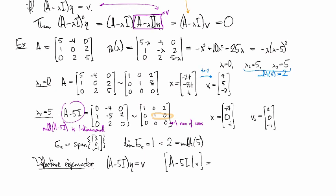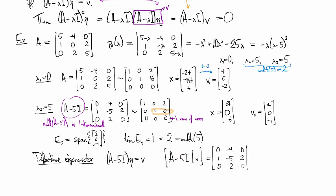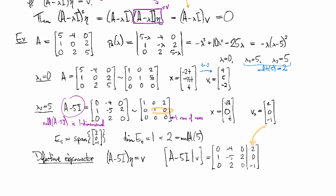So, in other words, I need to row reduce this augmented matrix right here. So, I have the same thing as before, [0 -4 0; 1 -5 2; 0 2 0] on the left. But, now there's more to it. I'm not solving a homogeneous equation. I've got a v tacked on there. So, I bring in the v from the previous step.